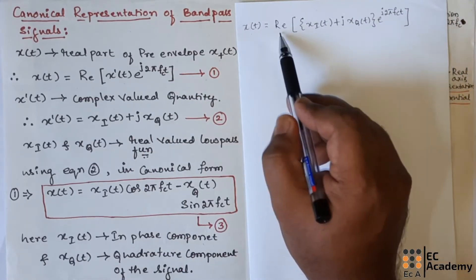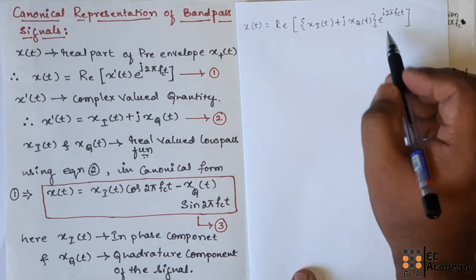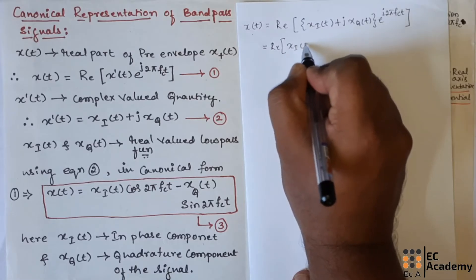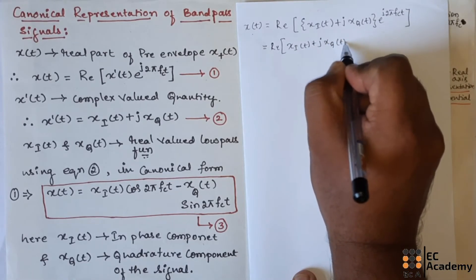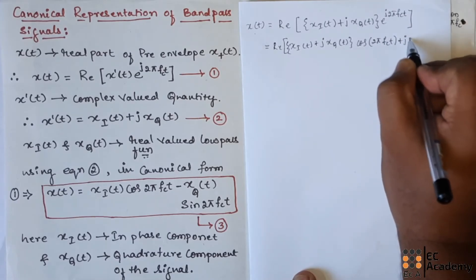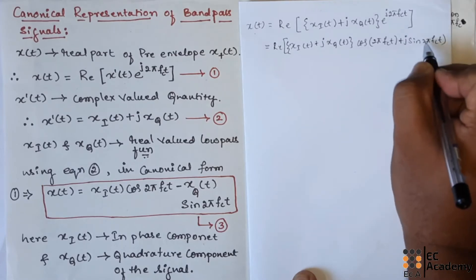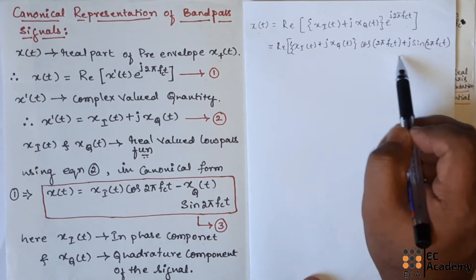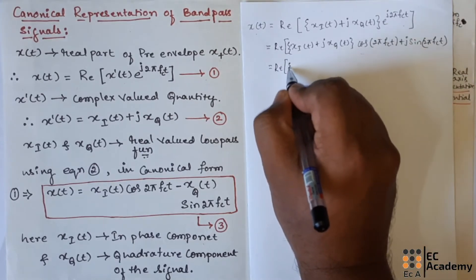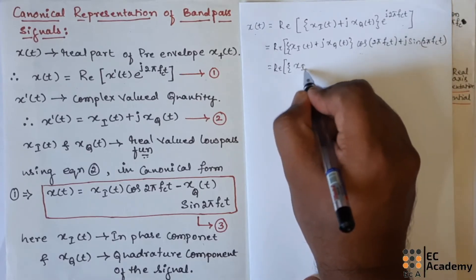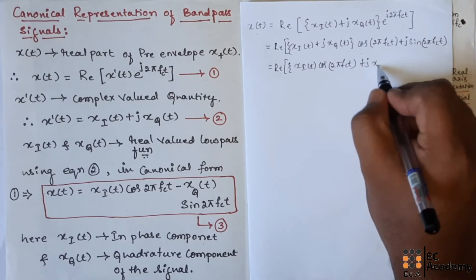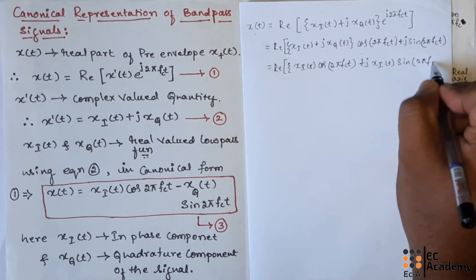We need to find x(t) which is the real part of this term. We can write the exponential term in cos and sin form. So we can write this as real part of [xI(t) plus j·xQ(t)] multiplied with [cos(2πfct) plus j·sin(2πfct)]. We have expanded the exponential term and written it in terms of cos and sin. Now let us multiply each term: if we multiply xI(t) with this term, it will be xI(t)·cos(2πfct) plus j·xI(t)·sin(2πfct).